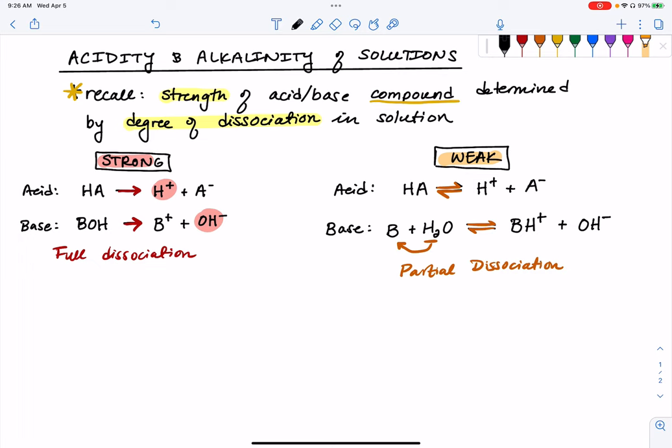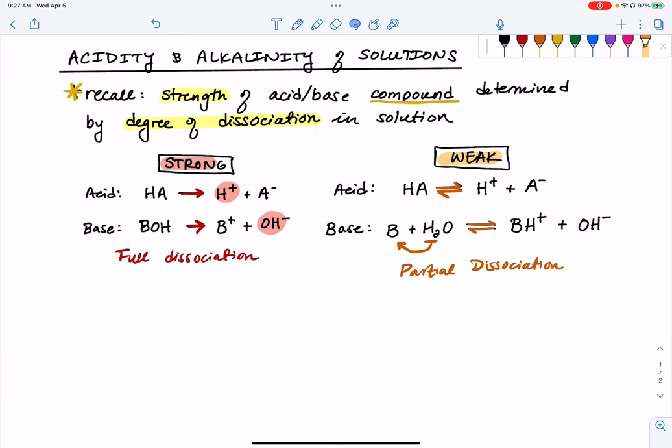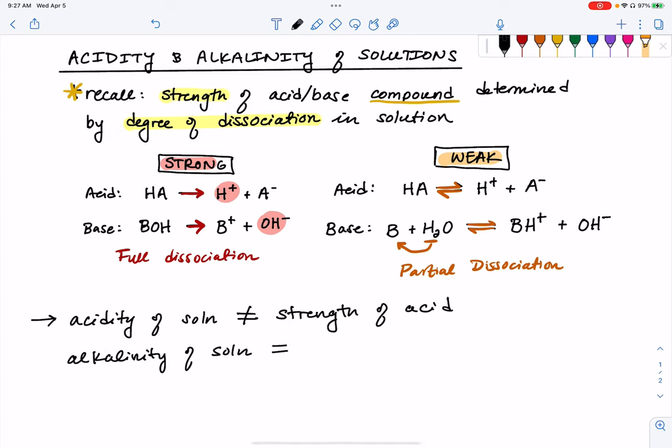Now, why are we talking about the strength or weakness of acid and base compounds when this whole section is titled acid and base alkalinity, basicity, acidity of solutions containing these compounds? The reason is I want to make super clear that the acidity of a solution is not something that is directly equivalent to the strength of the acid. Same deal with basicity, the alkalinity of a solution does not always mean that if we've got a strong base, we're going to have some kind of high, more basic, higher alkalinity solution.